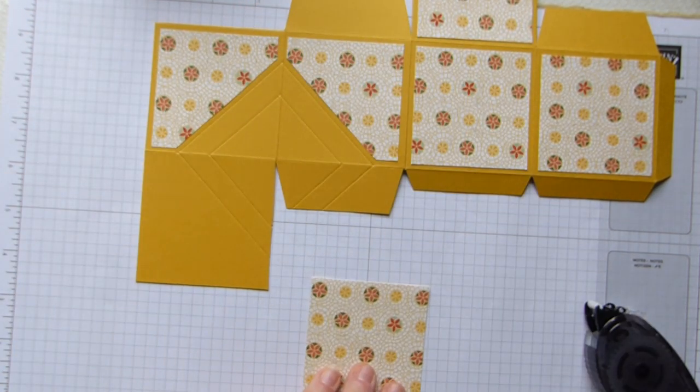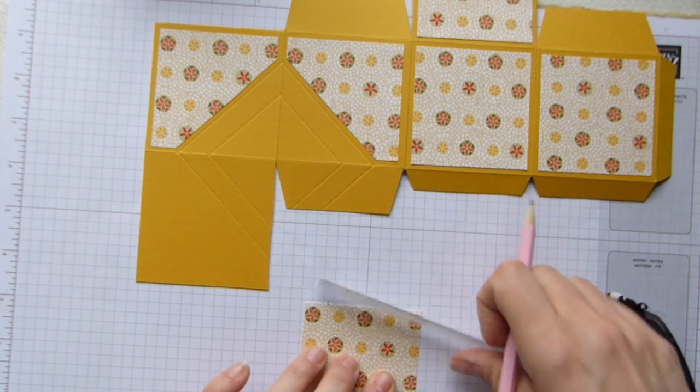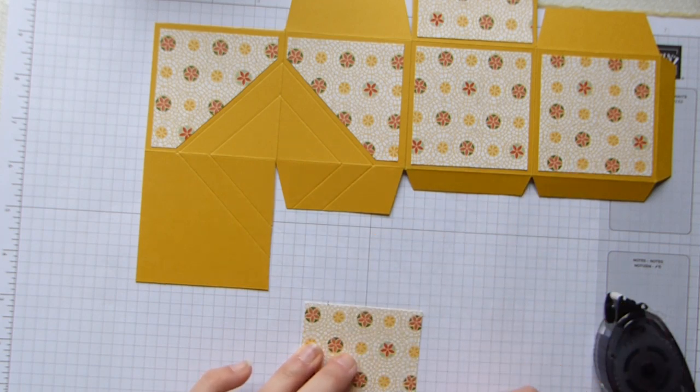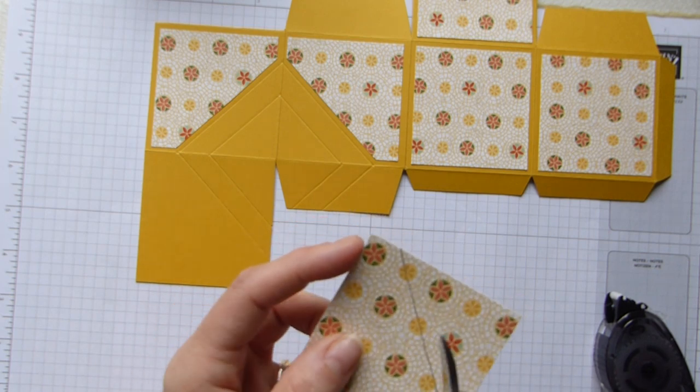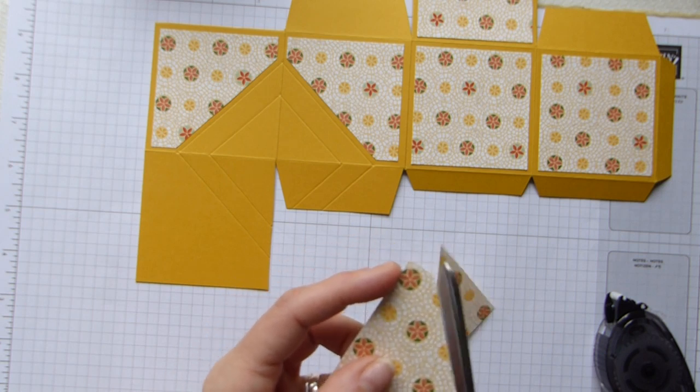Again, just pop some snail on there, and my last one. There and there, join those up, and then cut down the line.